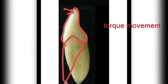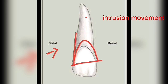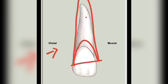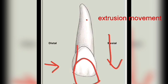Another type of movement is intrusion. When force is applied and the whole tooth body is displaced along its long axis in the apical direction, it is called intrusion. When the body is displaced along its long axis in the coronal direction, it is called extrusion. Both intrusion and extrusion are translatory movements.